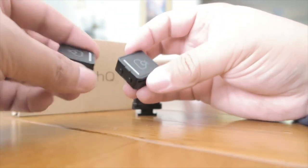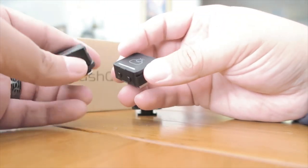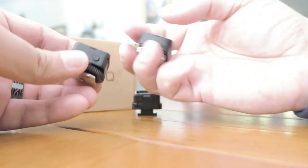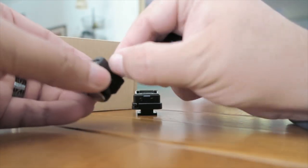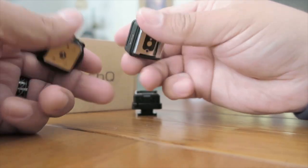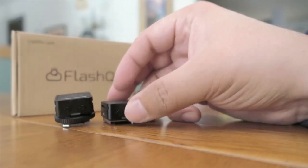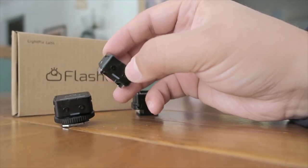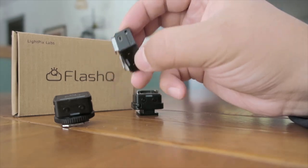So that is the same as the transmitter. So it just has that little latch, you just pull that up, just like we did with the other one. So that is basically, that's how you change your battery in these FlashQ triggers.